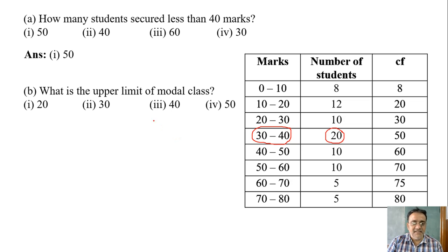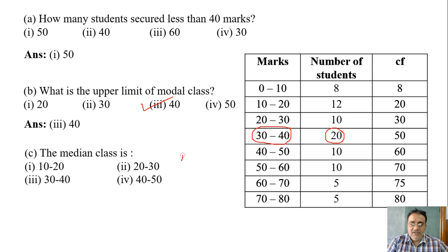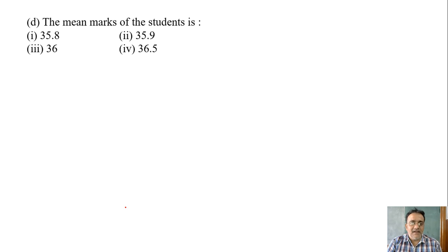Next question: the median class is, now the total n is equals to 80, so n by 2 is 40. 40, immediately after that is the median class, which is 30 to 40.